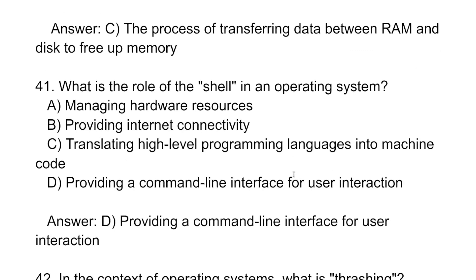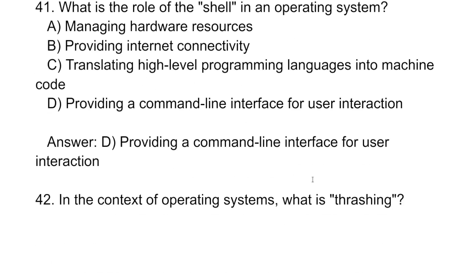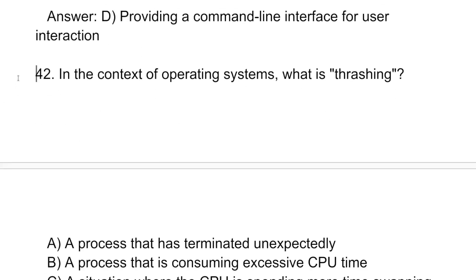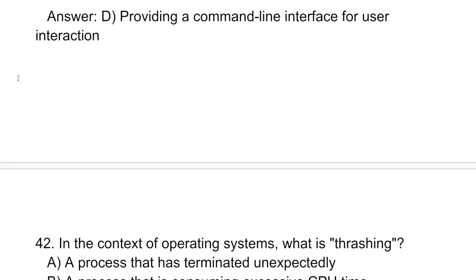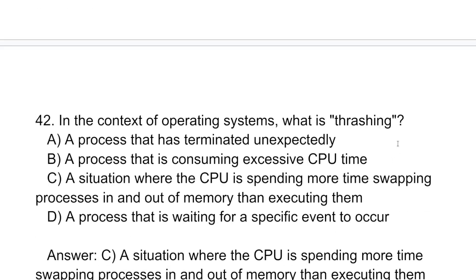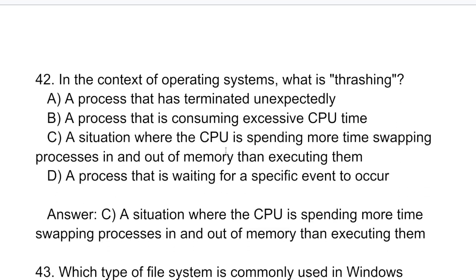What is the role of the shell in the operating system? The shell provides the command-line interface for the user. In the context of operating systems, what is thrashing? Thrashing is a situation where the CPU spends more time swapping processes in and out of memory than actually executing them.